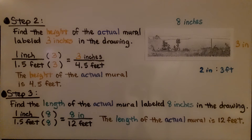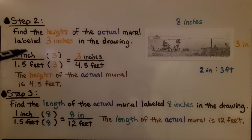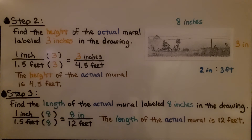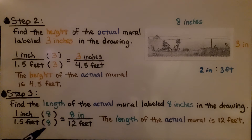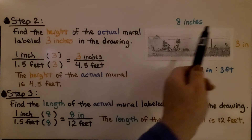Now we do the same thing for the length. We find the length of the actual mural, labeled 8 inches in the drawing. Using the same ratio, we multiply 1 inch by 8 and 1.5 feet by 8. One and five tenths times 8 is 12, so the length of the actual mural is 12 feet.